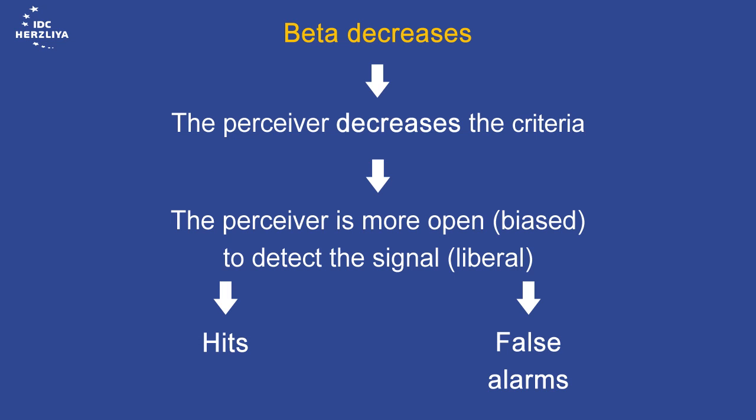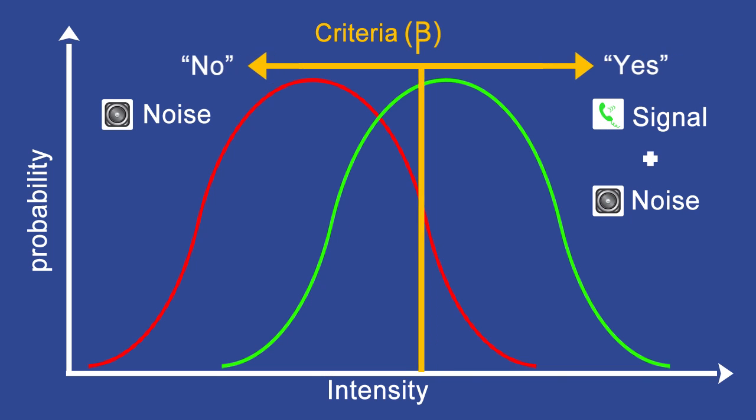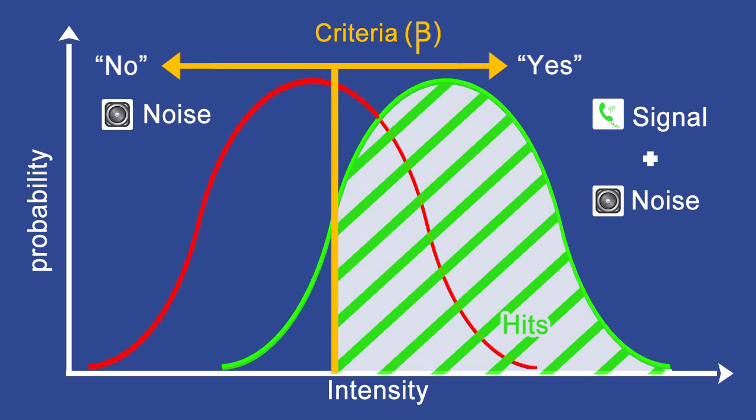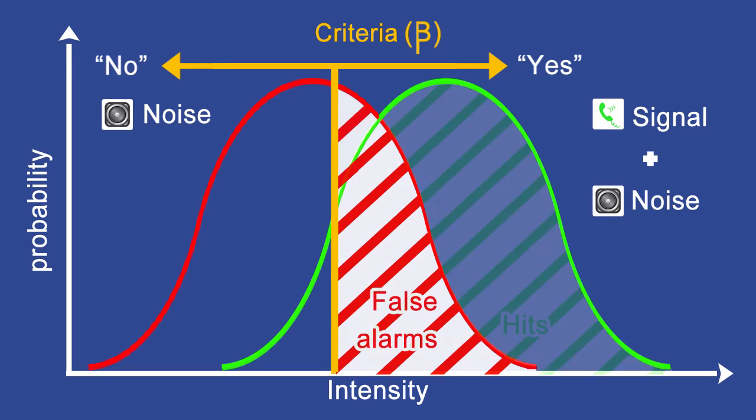The perceiver becomes more jumpy. The beta is moving to the left. We can see we have more hit, more false alarms, and less responses to the left of the line.